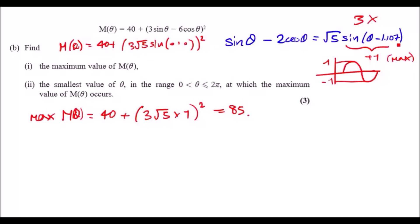Now to differentiate that, actually we don't need to differentiate because we've got the maximum value is 85. We can equate this equation to 85. So we can say 85 equals 40 plus 3√5 sin blah blah blah all squared.